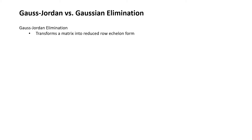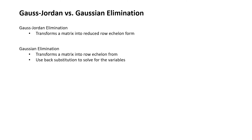The Gauss-Jordan elimination method transforms a matrix into reduced row echelon form, which then directly reveals the solution of the system of linear equations. The Gaussian elimination method transforms a matrix into row echelon form, where we then need to use back substitution to solve for the variables.